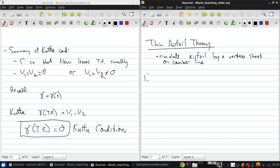So essentially, what we're trying to do is the following. Calculate gamma of s, the sheet strength distribution, so that the camber line becomes a streamline of the flow.